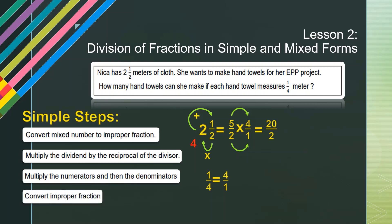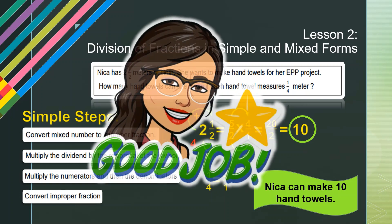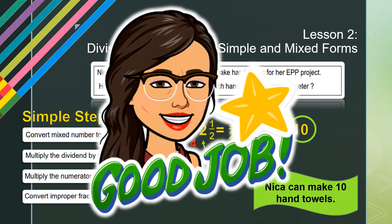Now convert the improper fraction twenty halves to a whole number. Since the numerator is larger than the denominator, divide twenty by two, which equals ten. So ten is the final answer — Nika can make ten hand towels.